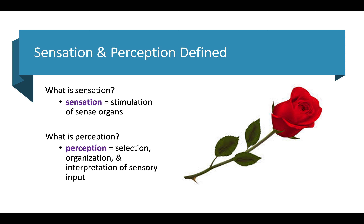For instance, like experiencing what a rose is — you may smell it, you may see the petals, see the color, see the thorns on it. So you take different information from sensory organs and put it all together to determine what it is that you're seeing or experiencing.